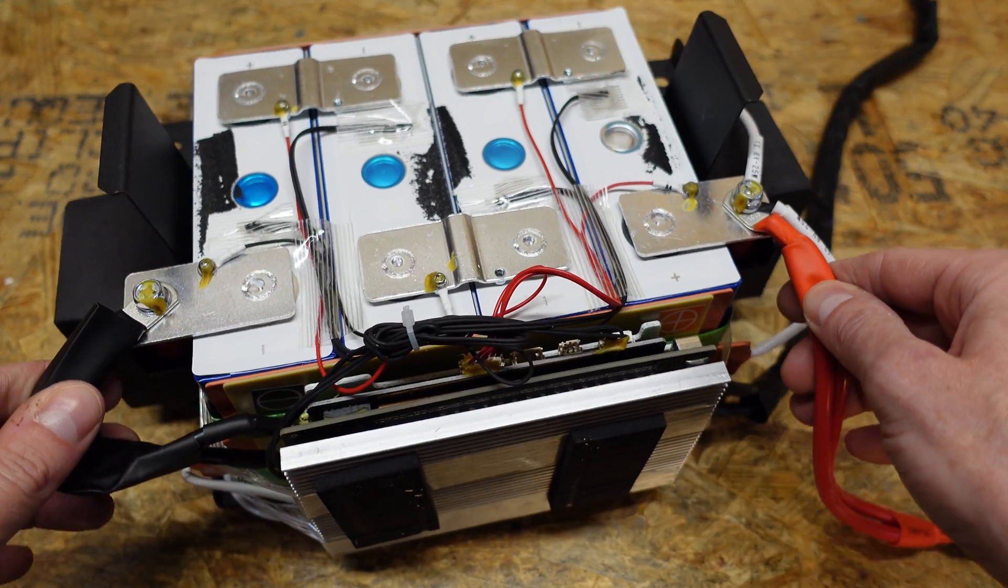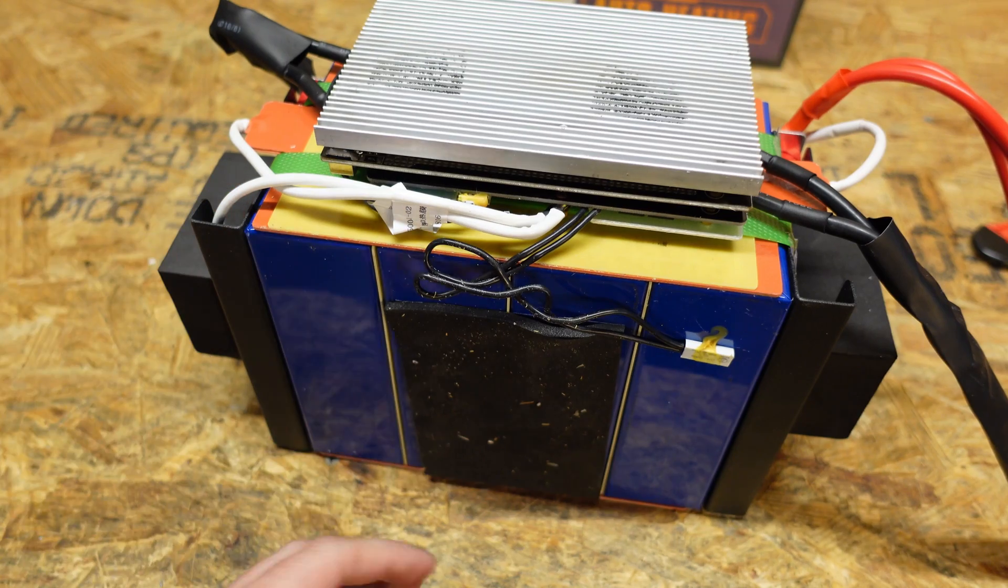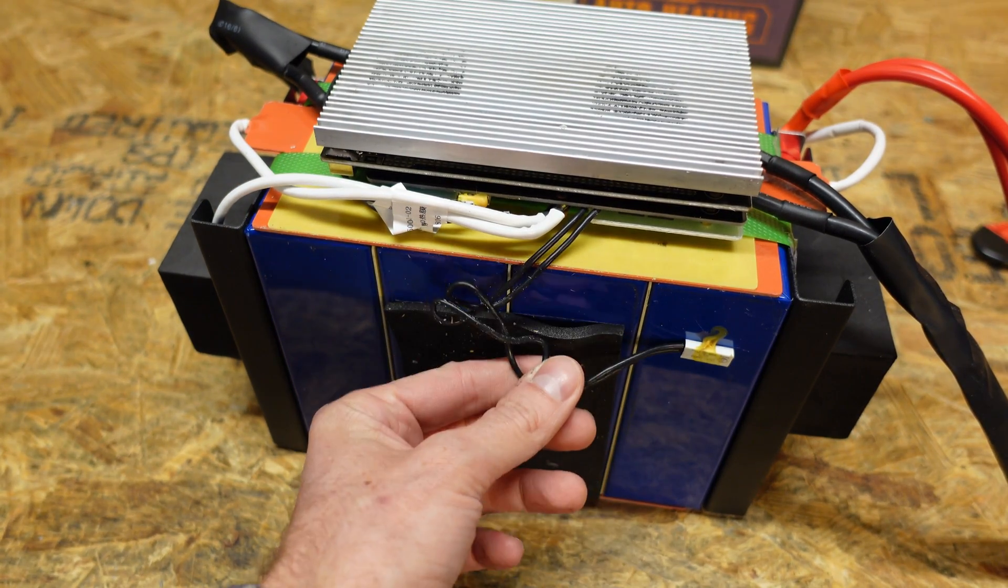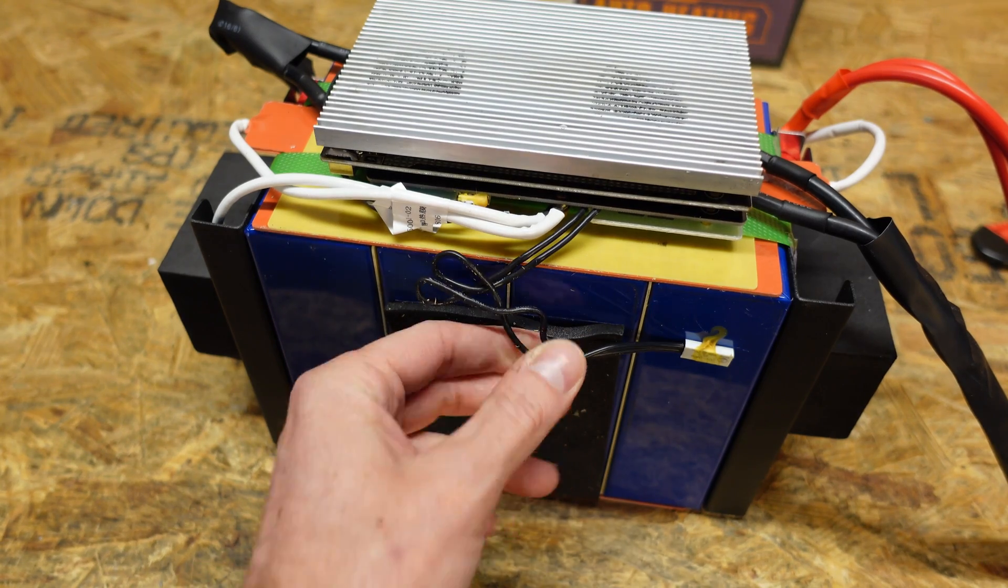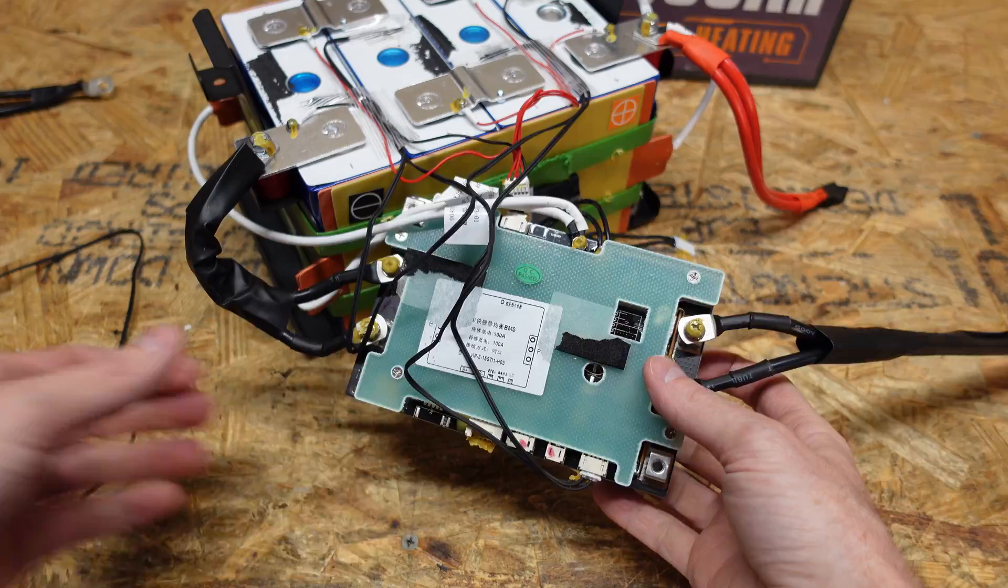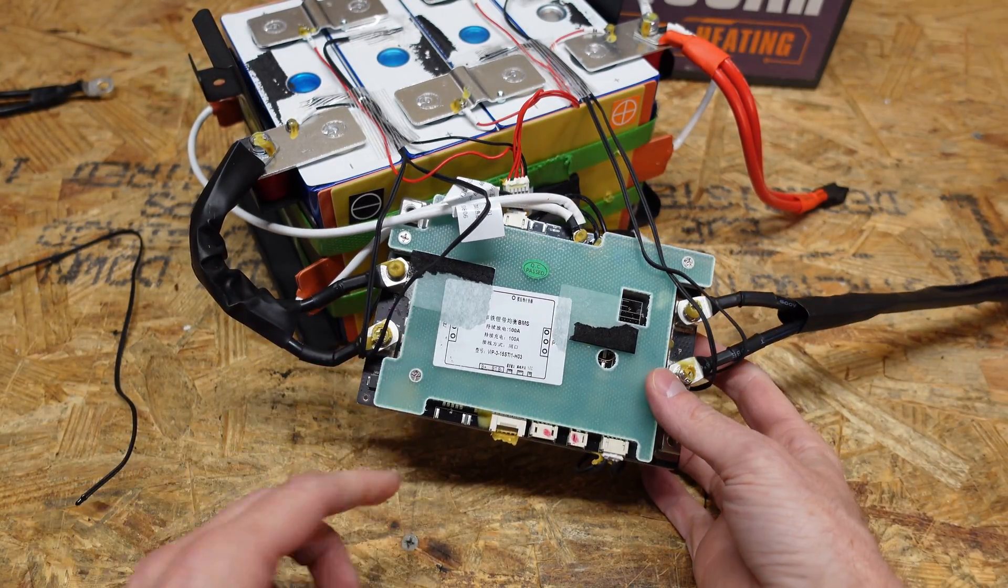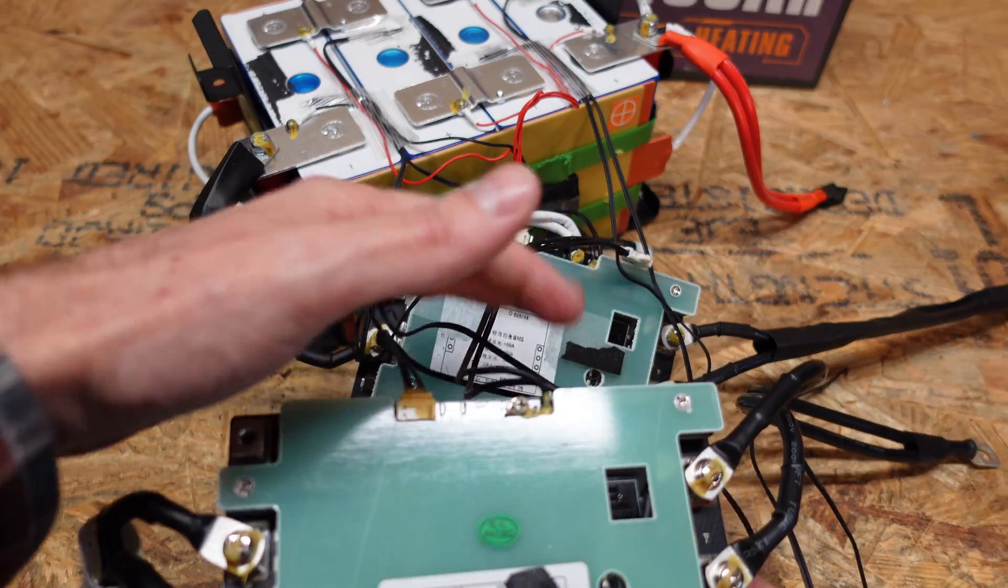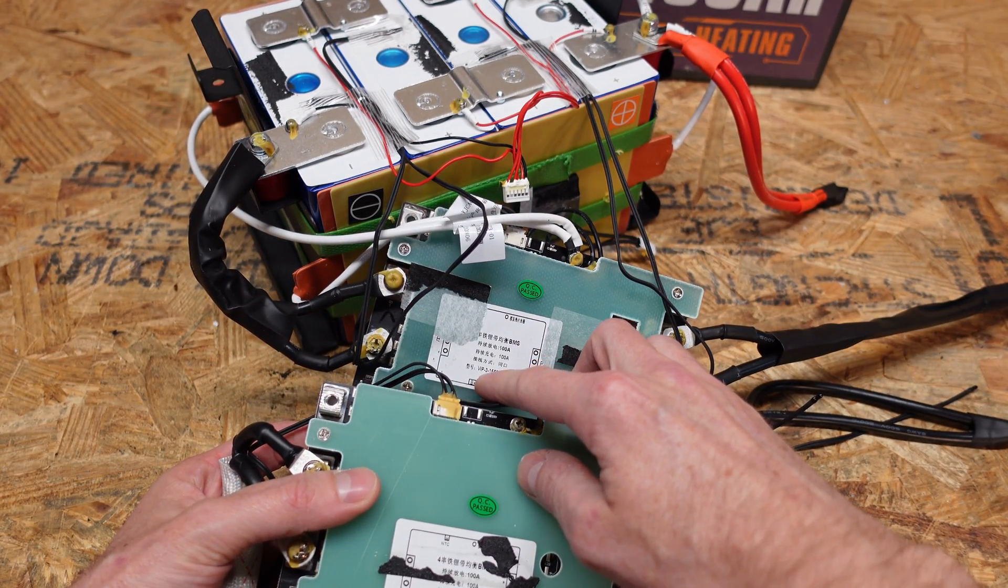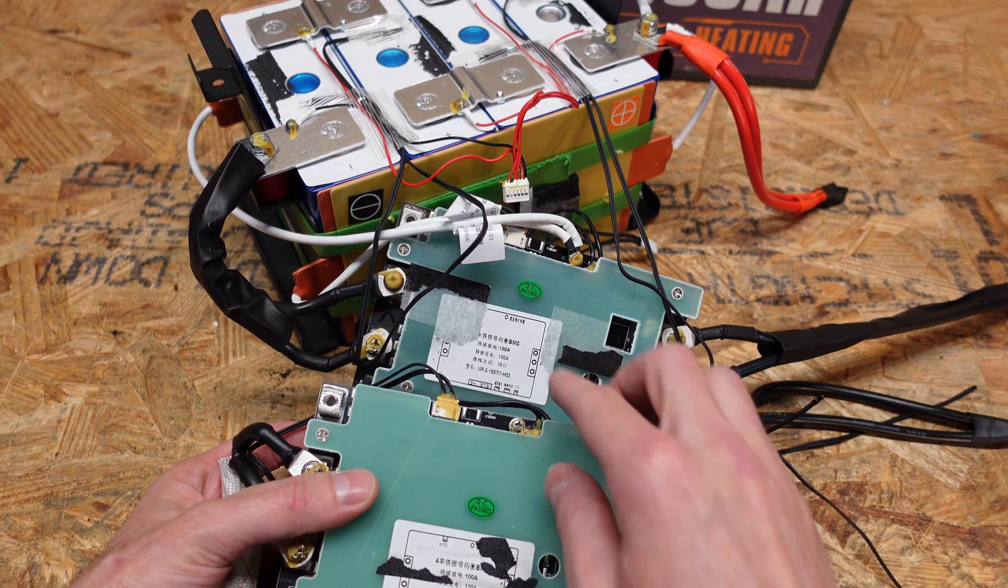Yeah this is going to be fairly quick because we had literally just reviewed this battery. So on the bottom of the battery here we do have a foam pad and we have a thermal switch. This thermal switch is used for the over temperature protection and this foam pad was positioned nicely to avoid having the switch crushed. Guys this is the exact same VIP brand BMS. So this one here is the BMS from the ampere time battery and they are both VIP3-15STI1-H03.